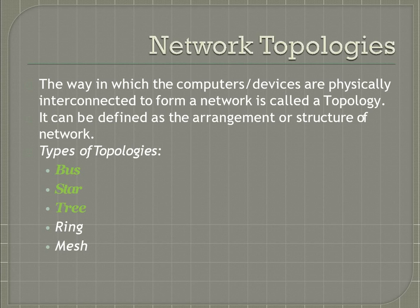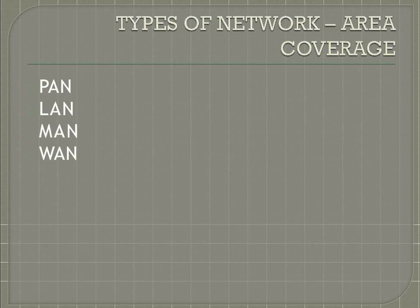Now we are going to discuss types of networks. A computer network may be small or big depending upon the number of computers and other network devices linked together. Networks vary in size, complexity, and geographical spread. On the basis of geographical spread, networks may be classified as PAN, LAN, MAN, and WAN.